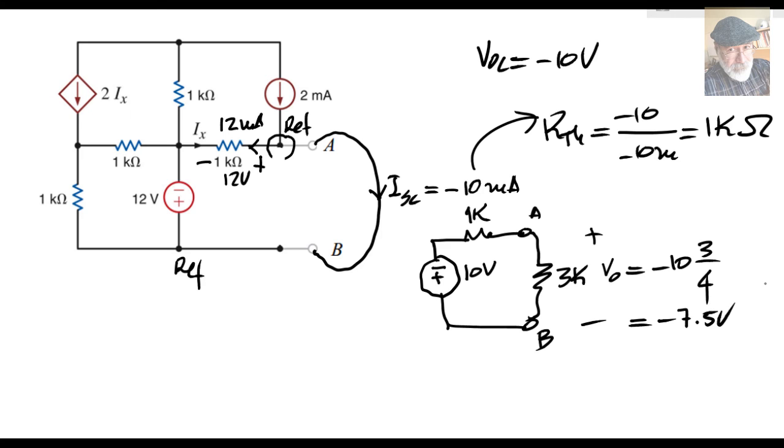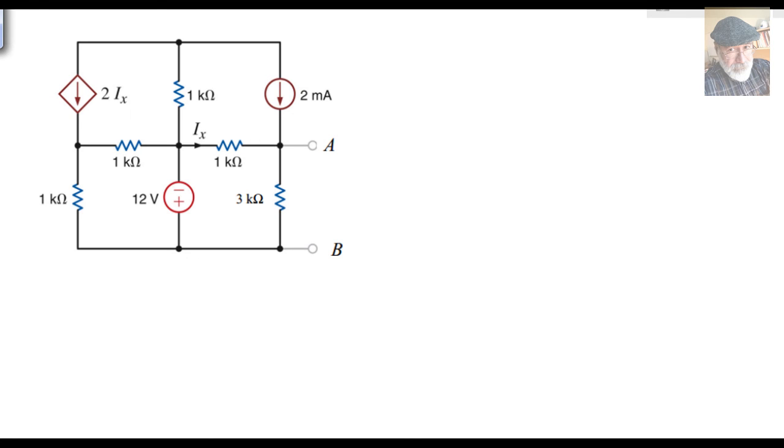But there was something else in the exercise. Let me erase all of that. Now, the exercise said, apart from the 3 kilo ohm resistor, I want to put an additional resistor of a known value, R, in parallel with that 3 kilo ohm resistor. I want to have maximum power here, Pmax. What should be the value of this resistor?